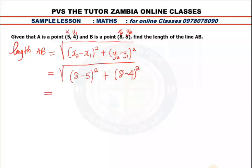So from here, what do we get? 8 minus 5, we get 3 squared, plus here it will be 4 squared. Do not forget the square root.